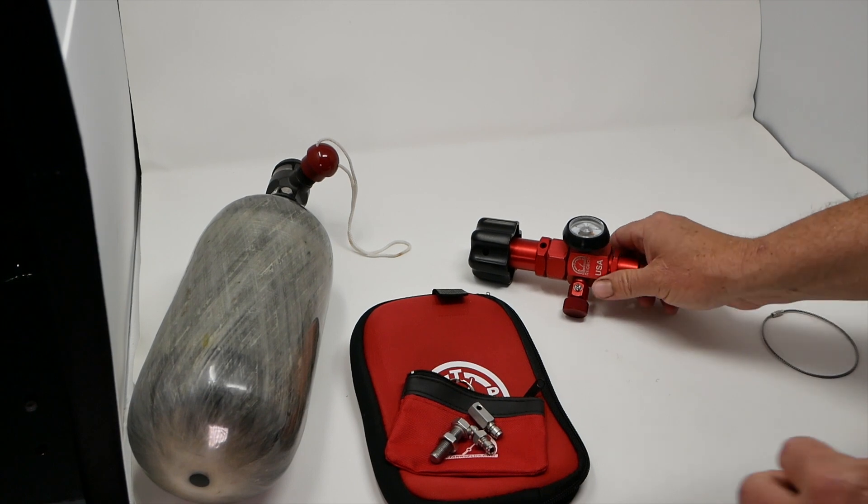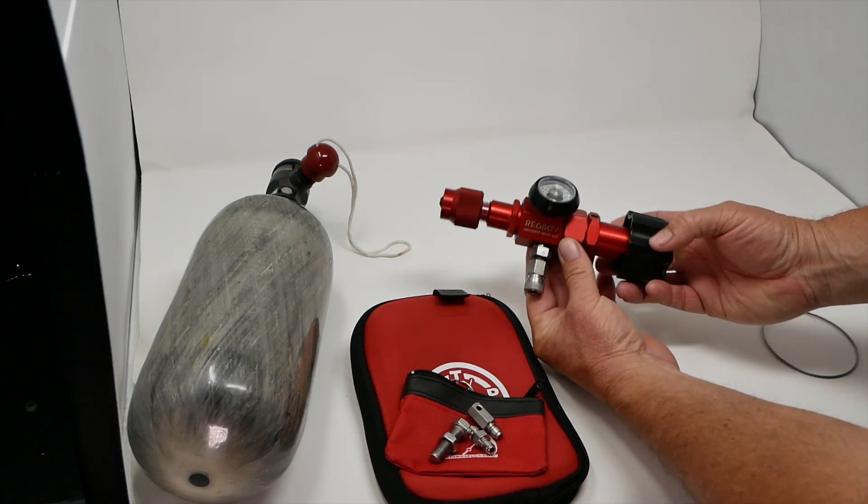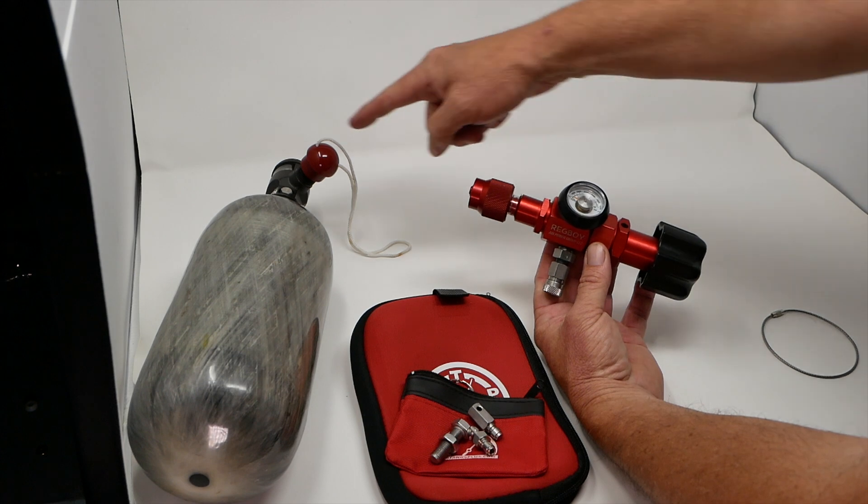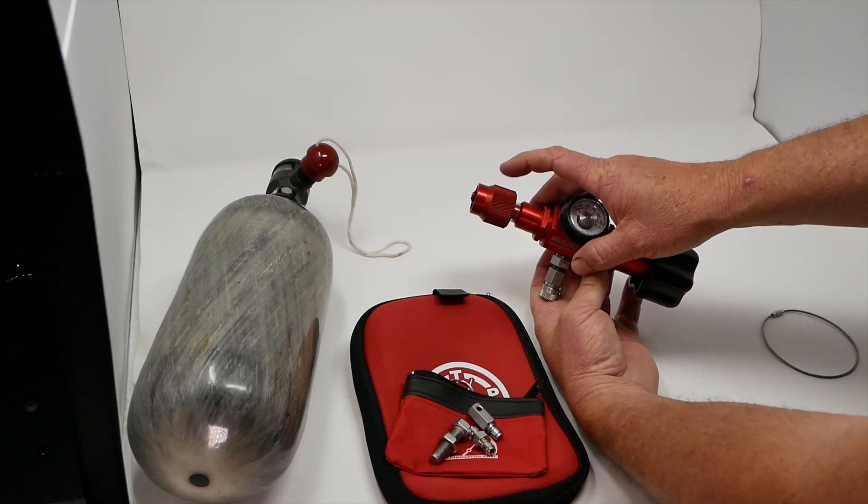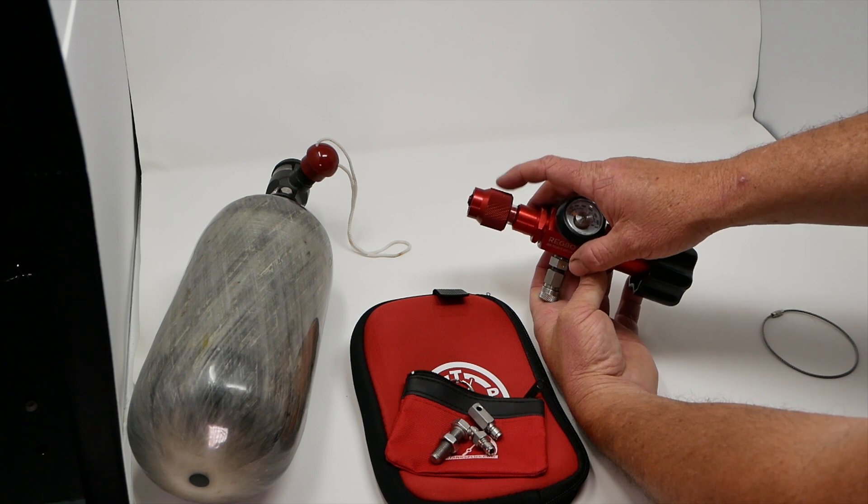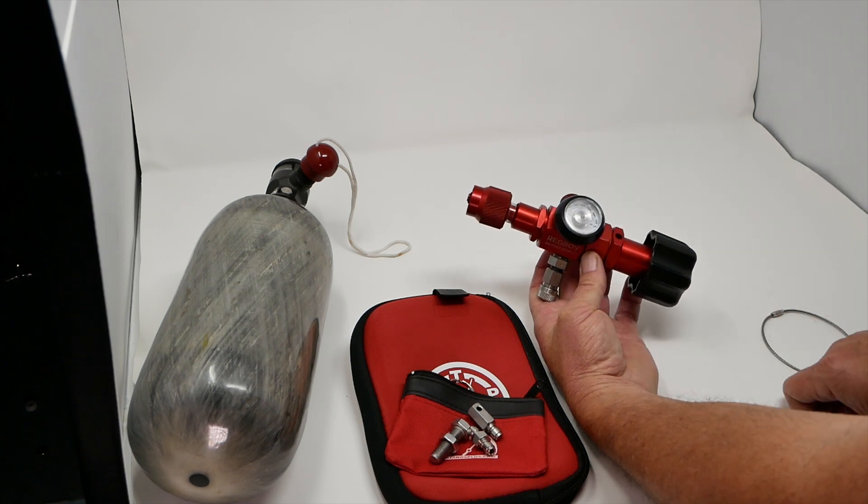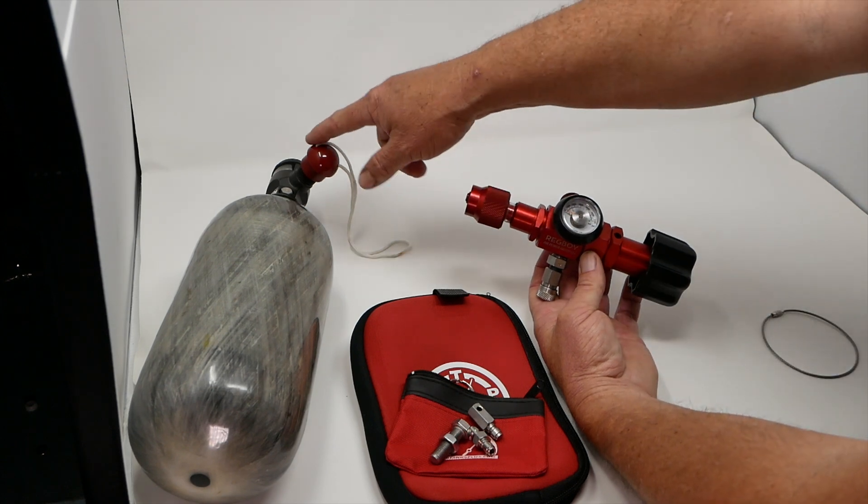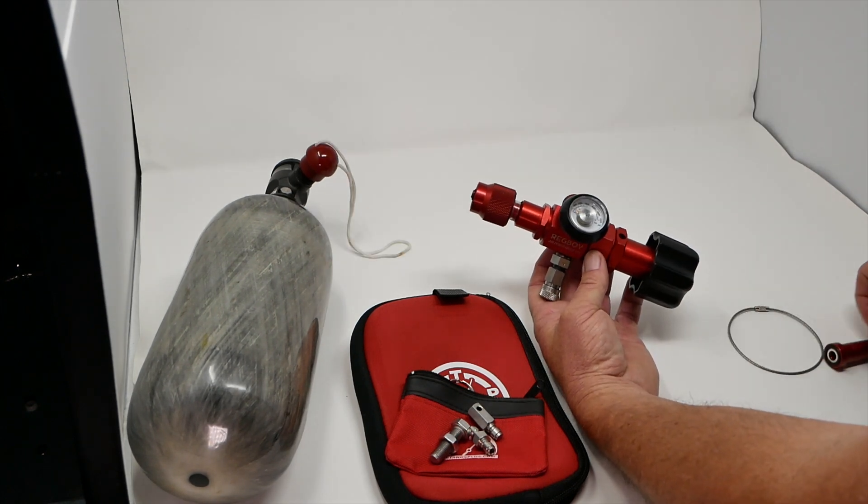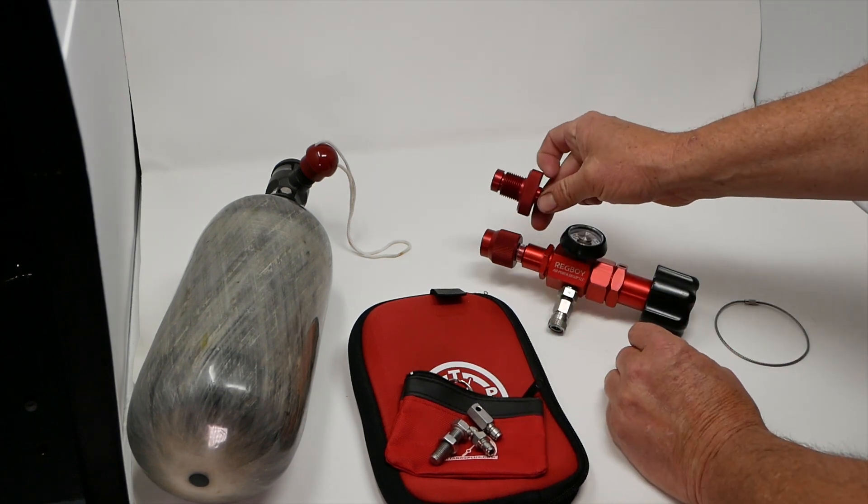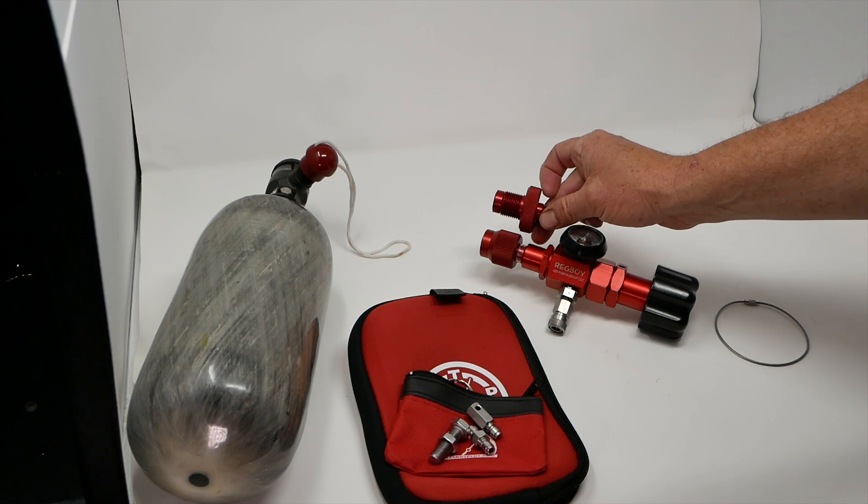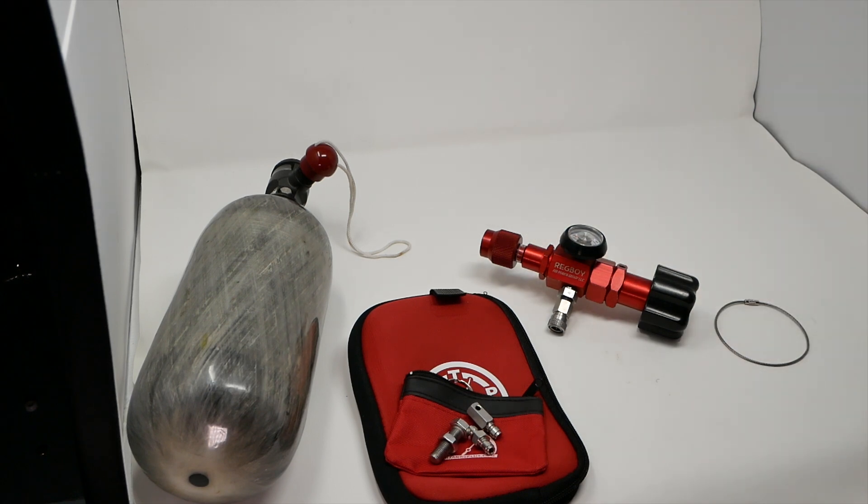This is the Reg Boy, an externally attached regulator. We sell this in two versions. We sell it with a CGA 347, this is called a SCBA valve right here. We also sell it as a DIN. So we can sell it with this configuration and that'll connect to your all-in-one fill tanks or tanks that have a DIN female fitting on them.